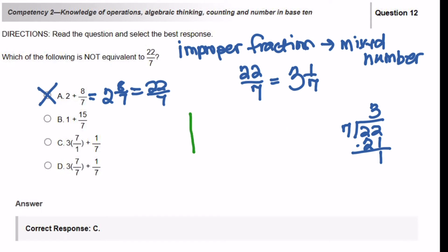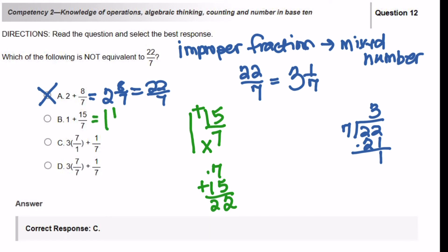Now we have 1 and 15 over 7. You're going to again multiply the denominator times the whole number and then add the numerator. So 1 times 7 is 7, and then you're going to add 15, and you get 22. So 1 and 15 over 7 is also equal to 22 over 7 — so we do not want this answer.